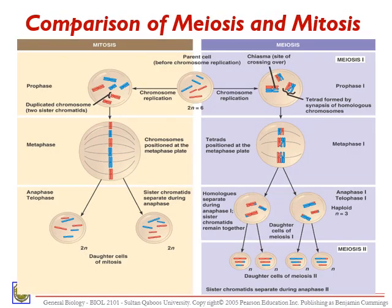Now that we have discussed all the details of meiosis, and in the previous lecture 4.1 we discussed the details of mitosis, we are ready to compare meiosis and mitosis in detail. The similarity between the two is that DNA replication occurs only once during interphase — in both mitosis and meiosis. Now let's look at the differences.